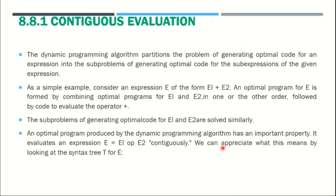Consider a simple example: an expression E which contains E1 plus E2. To evaluate this expression optimally, we load the values of E1 and E2 into registers and then evaluate in any order — R1 plus R2 or R2 plus R1. That is the advantage of optimal code evaluation.